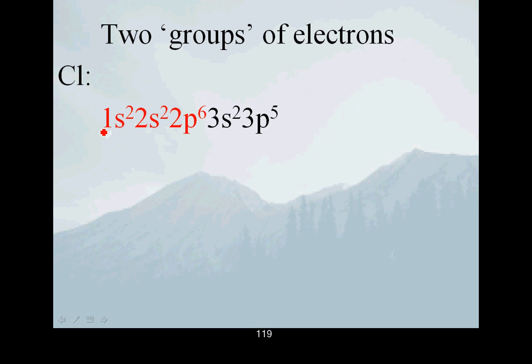Now chlorine has a noble gas buried in it - the 1s2, 2s2, 2p6 - that's our noble gas, what we call the core electrons. And then we have these electrons in the outermost shell which we call the valence electrons.